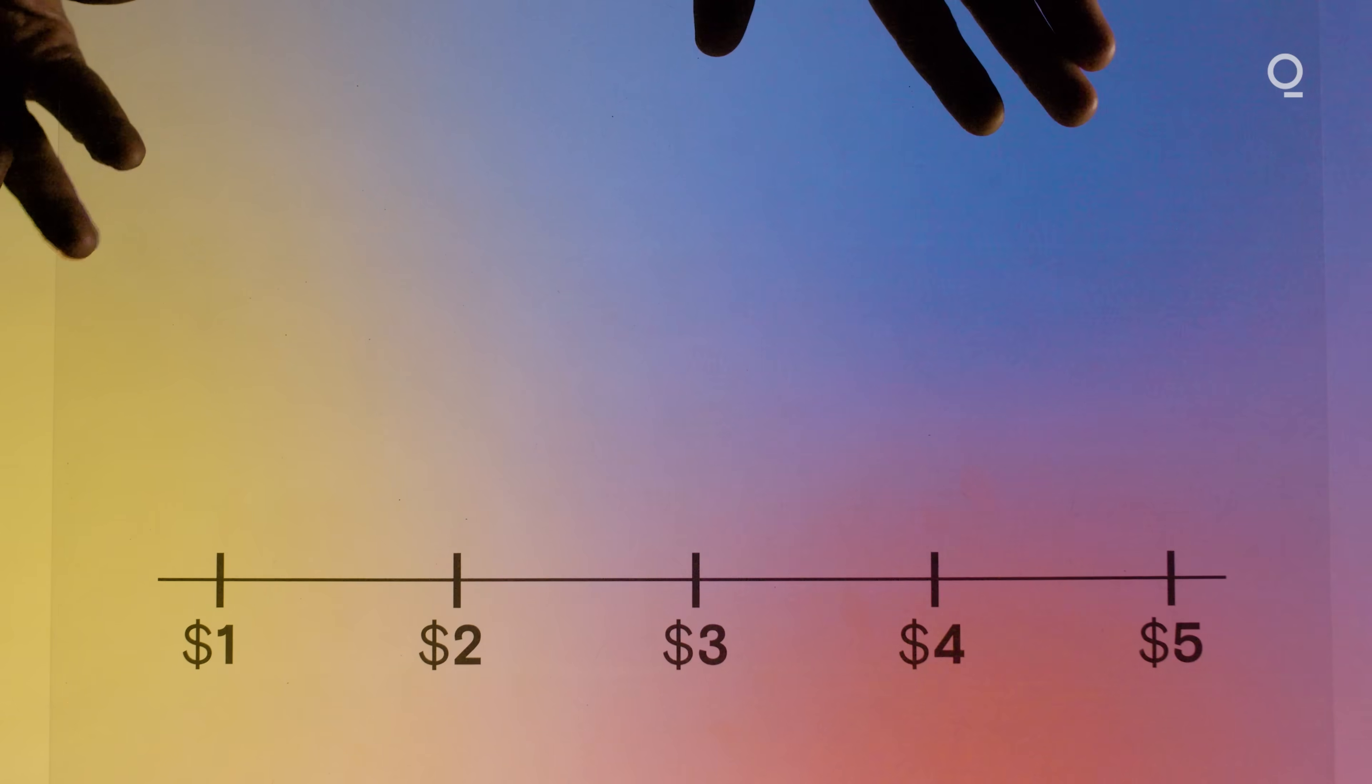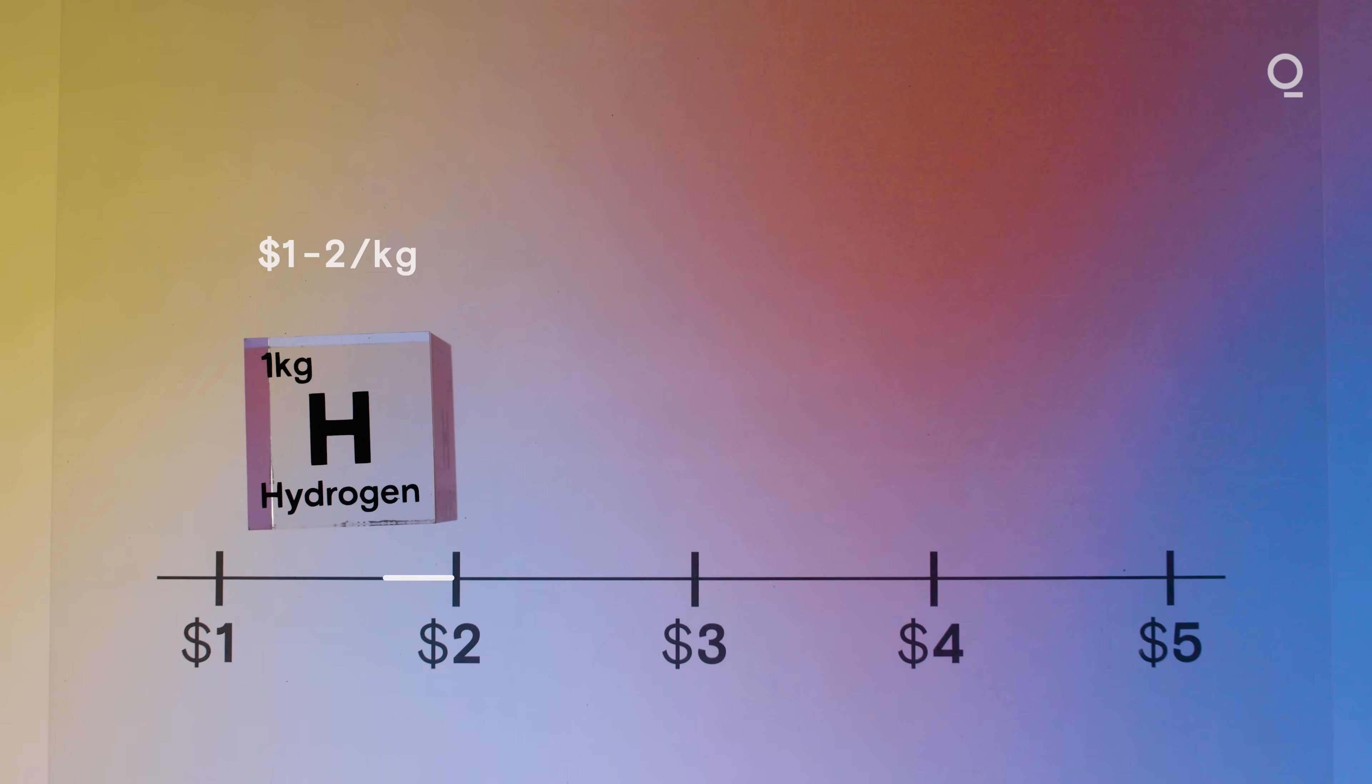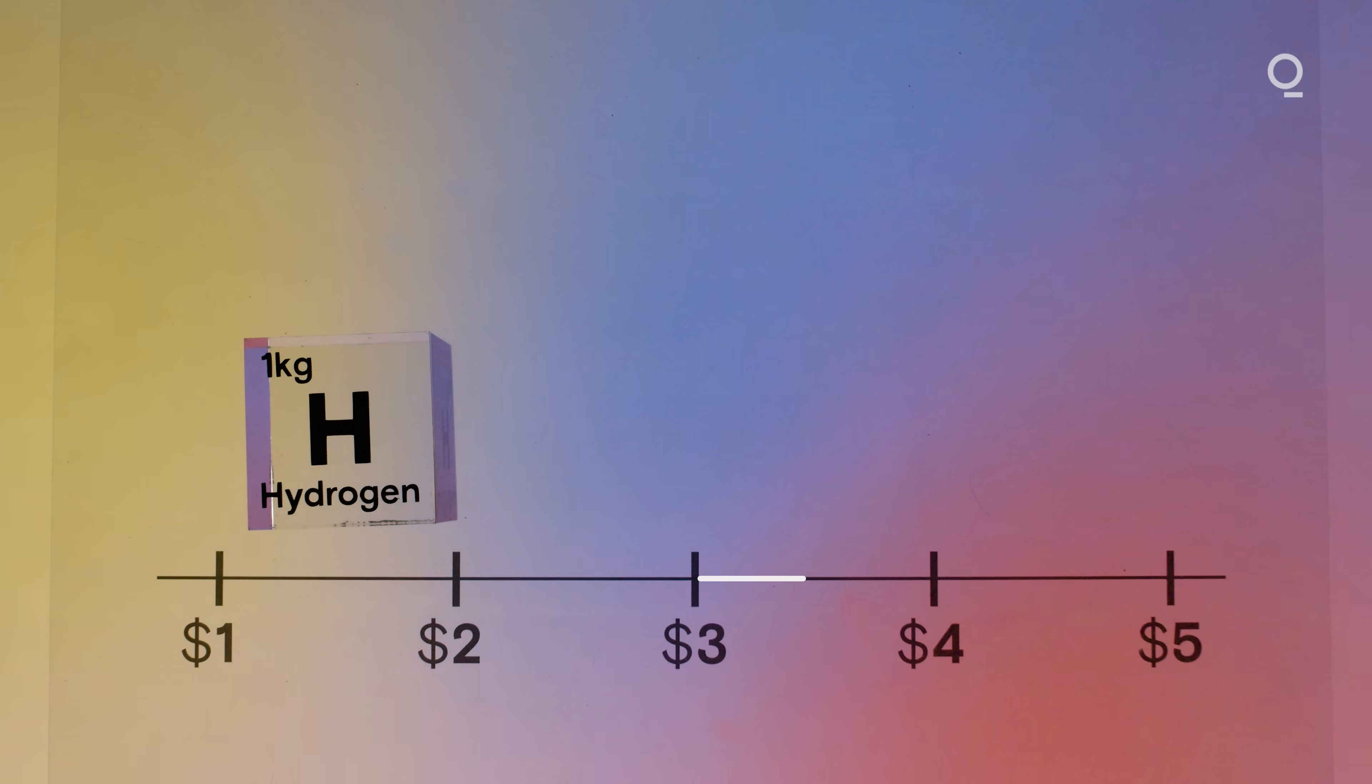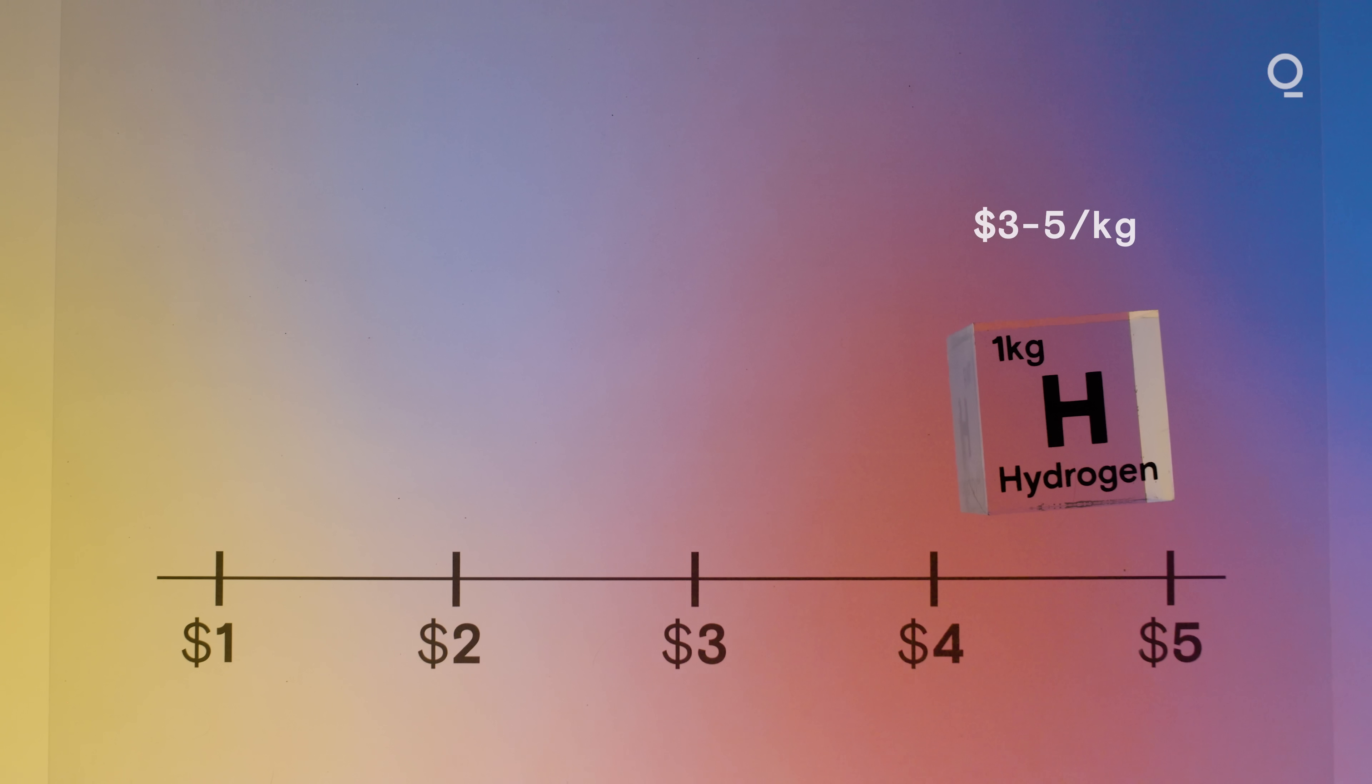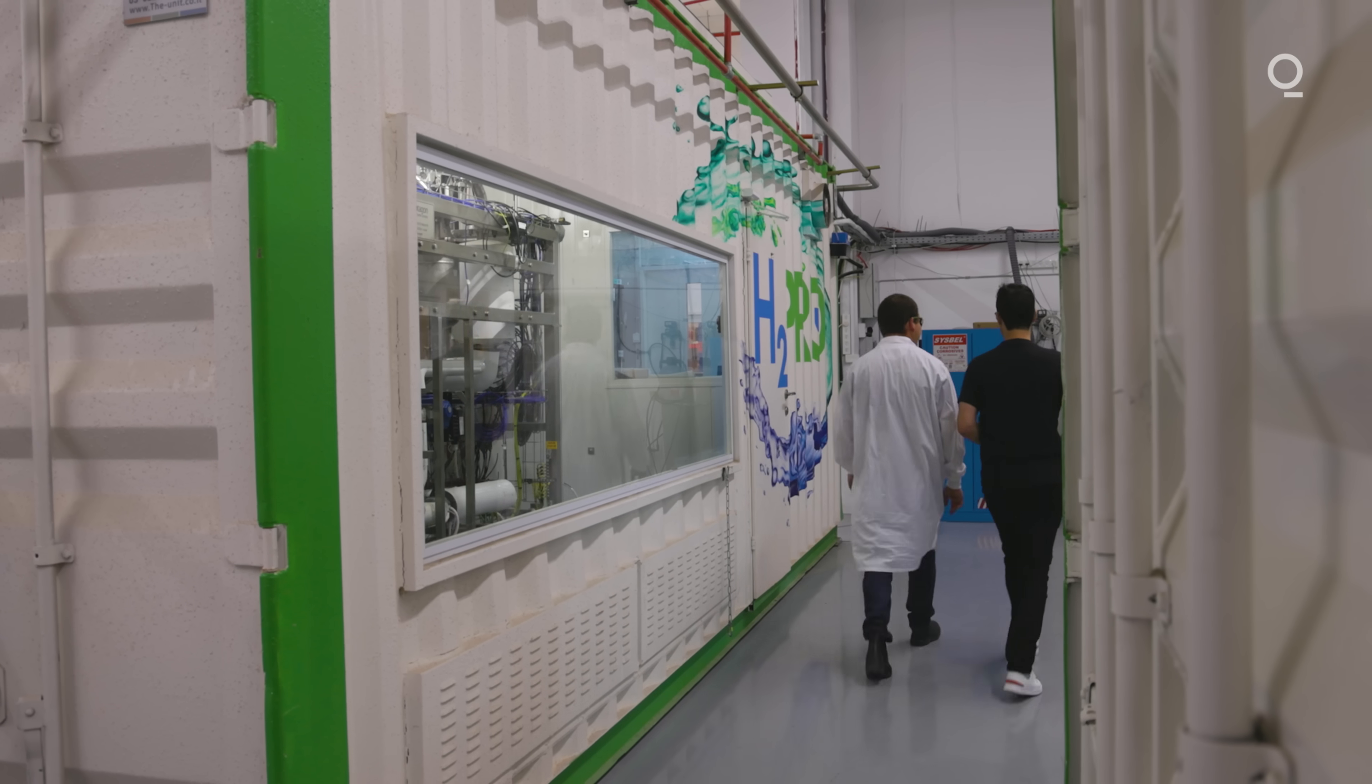The long-term goal for hydrogen to become a viable fuel is for it to cost between $1 or $2 a kilogram. We are nowhere close to that. We are probably in the $3 or $4 or $5 range for green hydrogen today. We anticipate that our customers will have a cost of about $1 per kilogram of green hydrogen by the end of this decade.